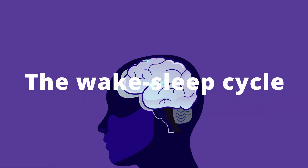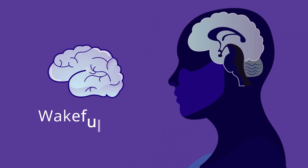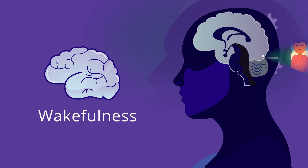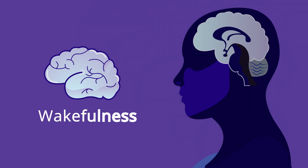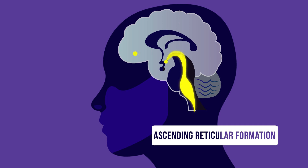The human wake-sleep cycle has three distinct phases. Phase one is wakefulness. In wakefulness, the brain is highly active. It receives signals from the peripheral sensory organs and generates vivid experiences like vision, sounds, touch, and so on. Wakefulness centers are scattered around in the brainstem, hypothalamus, and the basal forebrain, and are collectively known as the ascending reticular formation, or ARAS.